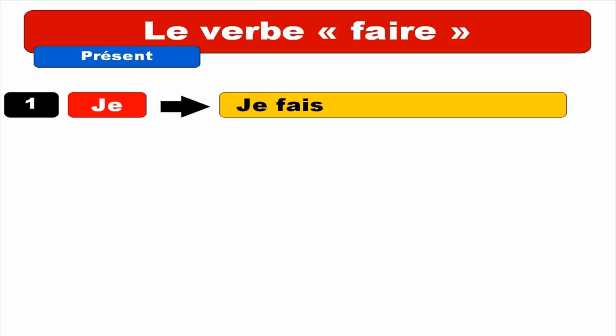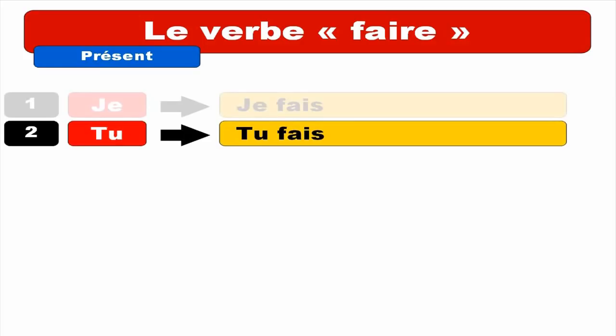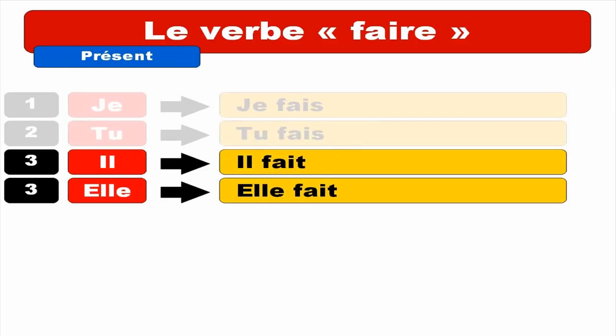Second form — TU FAIS. Same form, same pronunciation. Final S is not pronounced. TU FAIS. Repeat. TU FAIS. And then comes IL masculine and ELLE feminine. IL FAIT — same pronunciation. Final T is not pronounced. IL FAIT. Repeat. IL FAIT.